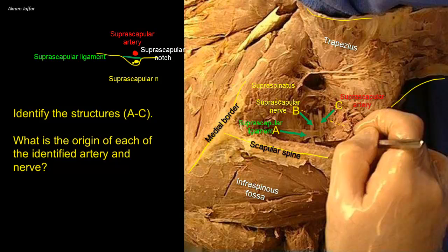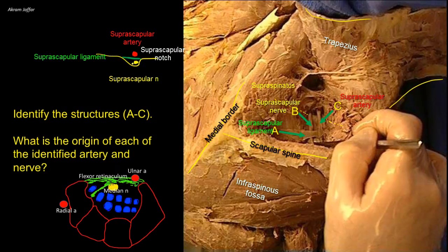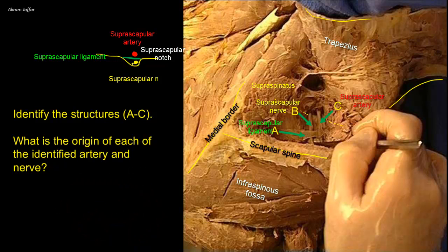The suprascapular artery, like arteries elsewhere in the body, avoids passing through tight compartments — hence it passes superior to the ligament. Remember the situation of the median nerve passing beneath the flexor retinaculum within the carpal tunnel, while the radial and ulnar arteries do not pass through the tight tunnel. The suprascapular nerve is a branch of the upper trunk of the brachial plexus. It supplies both supraspinatus and infraspinatus muscles.